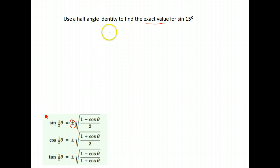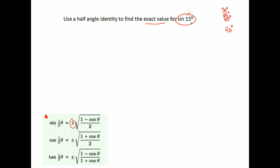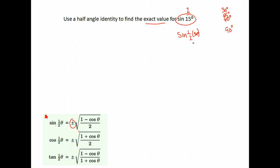So let's try this out. Use the half-angle identity to find the exact value of sine of 15 degrees. We only know the exact values for specific angles — the 30 degree angle, the 45 degree angle, the 60 degree angle, the 90 degree angle, and those angles as we go around the circle. So we want to write sine of 15 as the half of some angle. To find what angle it is half of, we multiply by 2: 2 times 15 is 30. So 15 is half of 30.